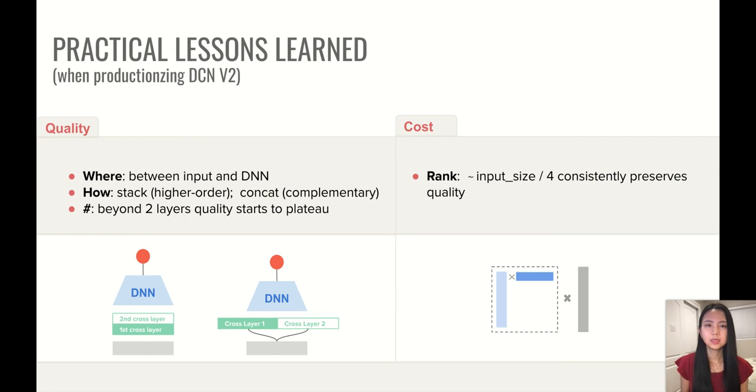And in terms of cost, if we do want to use low rank approaches to reduce the cost, choosing the rank to be roughly a quarter of your input size has consistently preserved the quality for us as compared to the full rank.